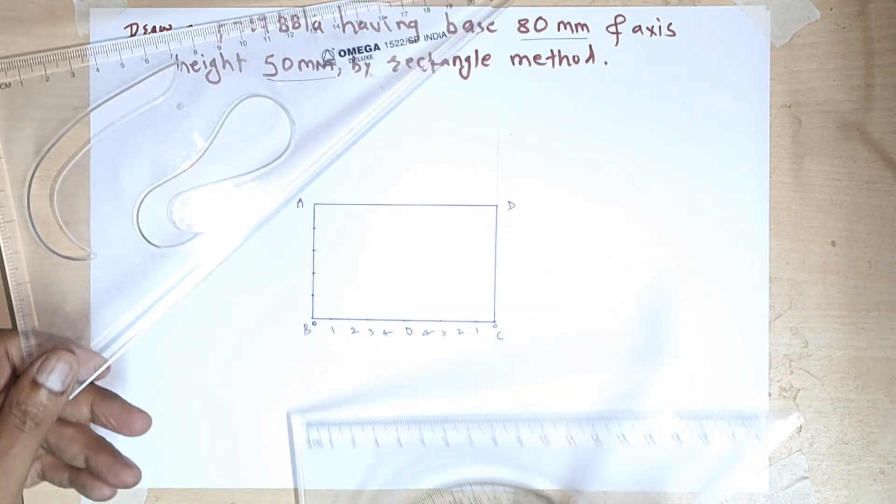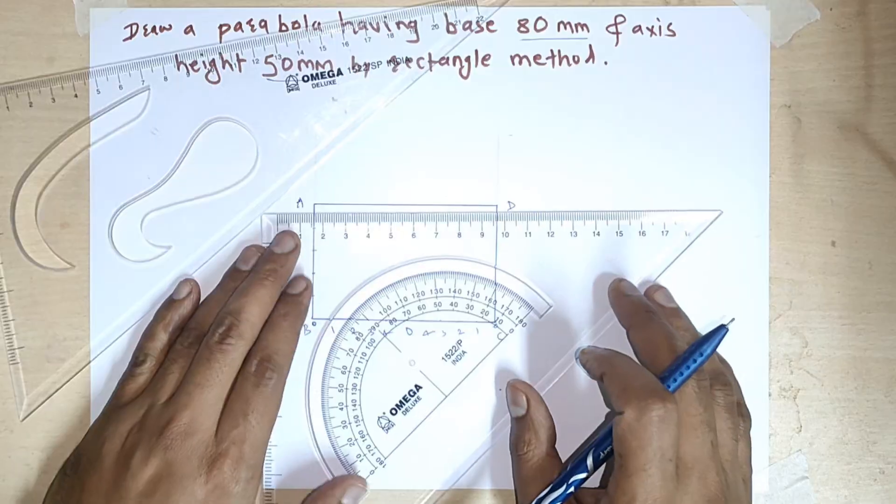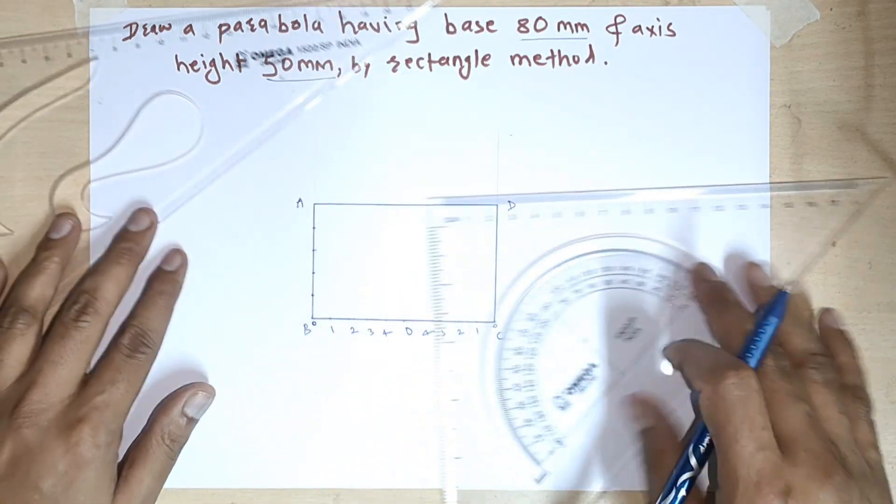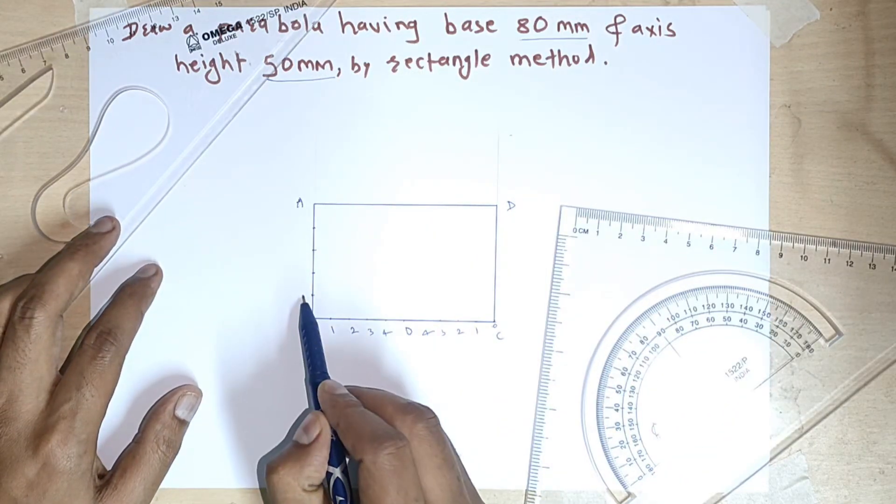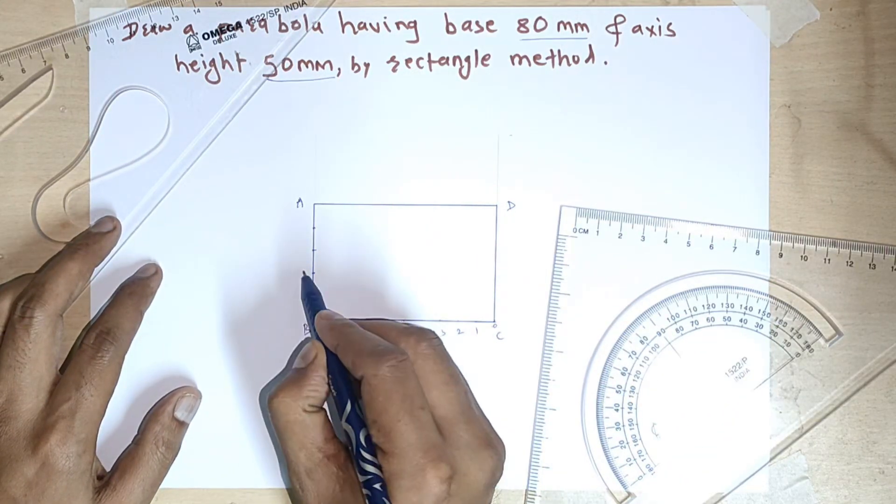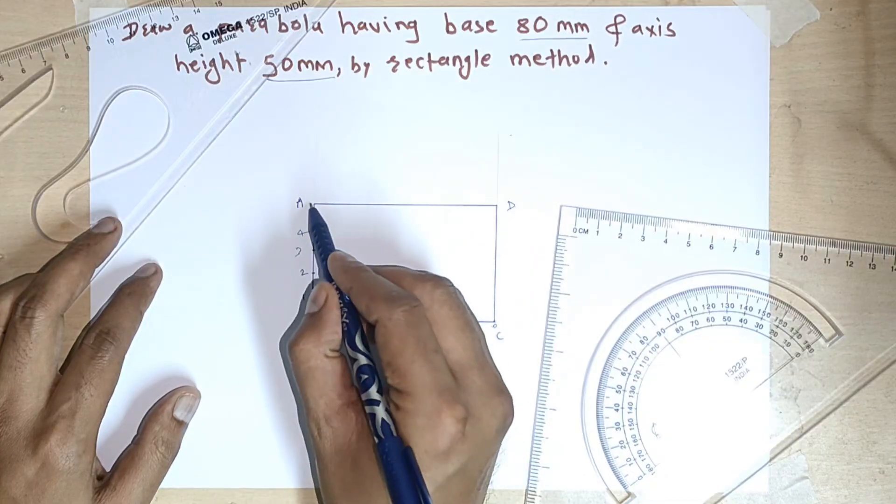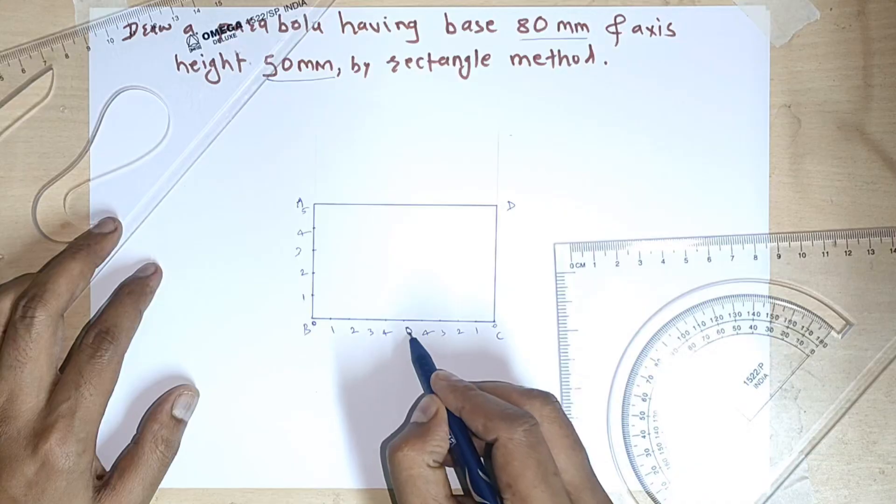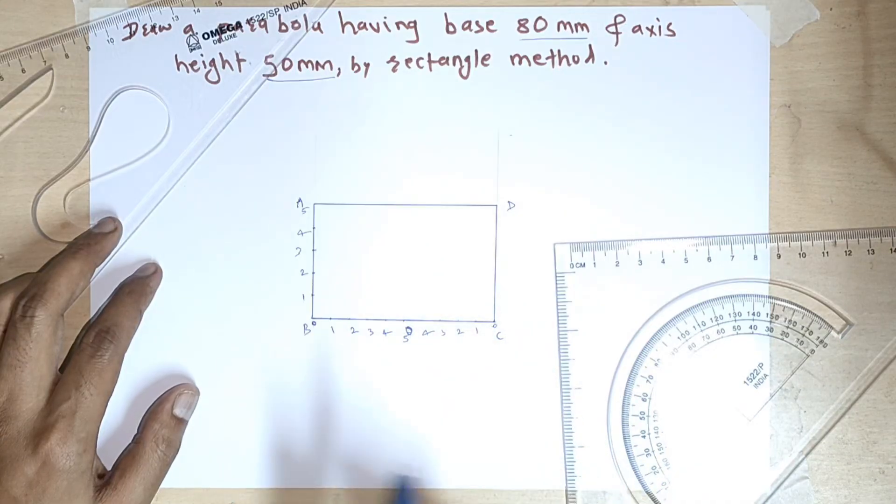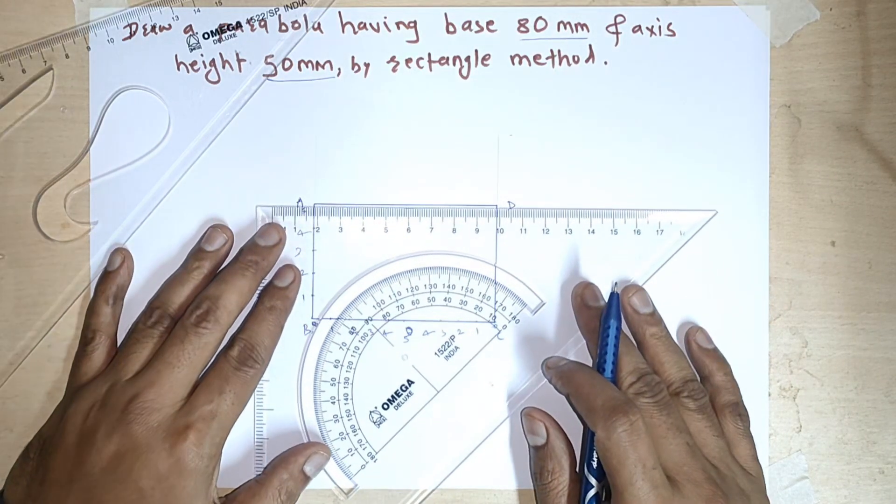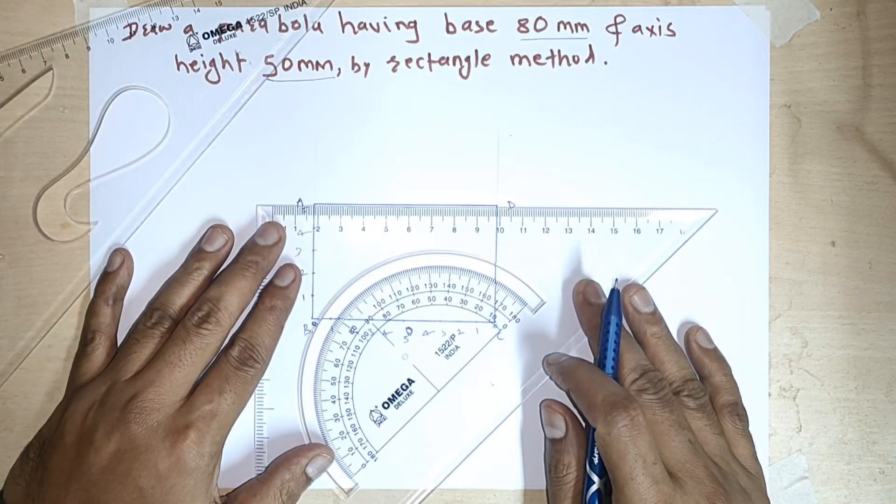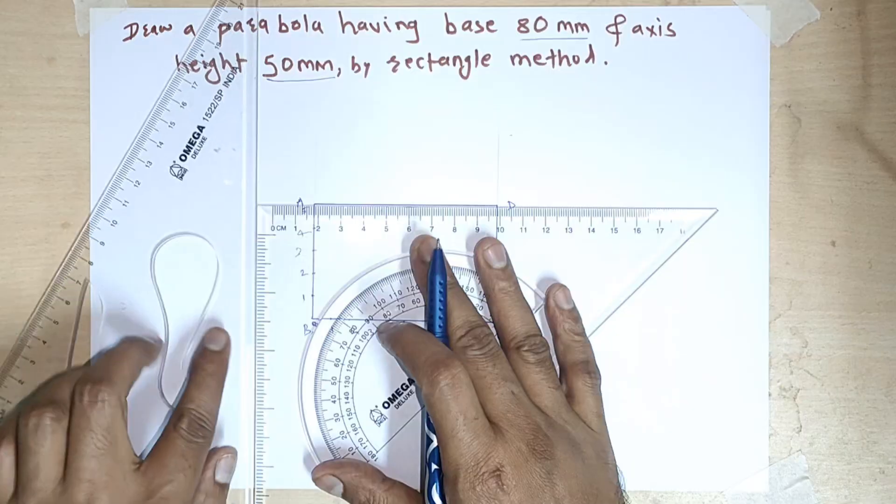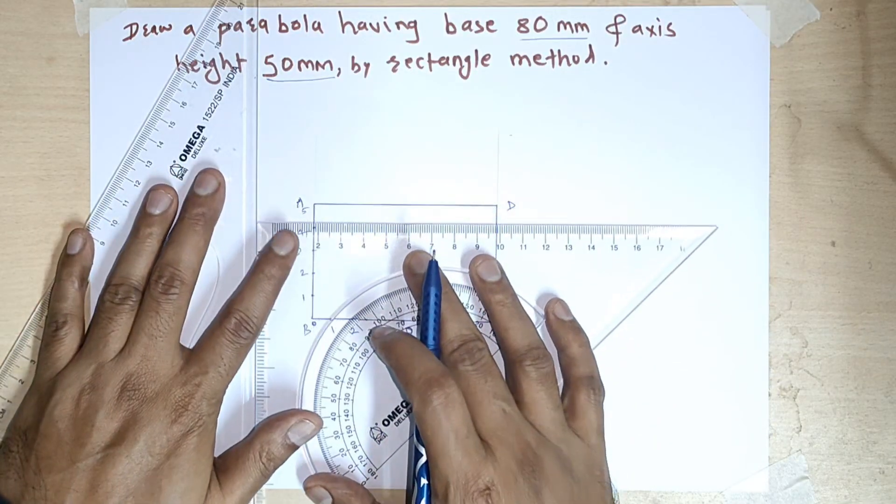Now draw the horizontal lines. Now this is 0, this is 1, 2, 3, 4 and this is our 5th point here. Here again, this is our 0 point or we can say that it is 5th number. Now draw the horizontal lines from these points. Horizontal lines from these points.